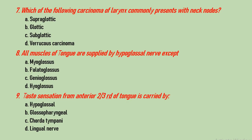Question number 7: which carcinoma of the larynx commonly presents with neck nodes? Options are supraglottic carcinoma, glottic carcinoma, subglottic carcinoma, and verrucous carcinoma. Neck nodes are common in supraglottic malignancy, hoarseness is common in glottic malignancy, and stridor is common in subglottic malignancy. Subglottic is the narrowest portion of the larynx. Verrucous carcinoma is also defined as a super well-differentiated squamous carcinoma and is a slow-growing tumour.